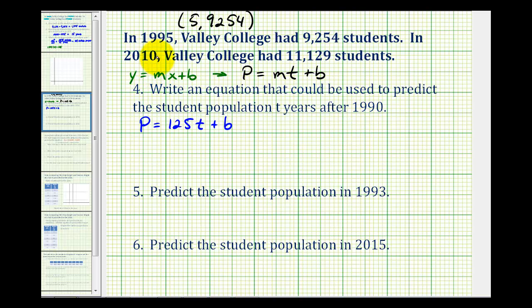And then for 2010, the coordinates of the point would be 15 comma 11,129. So we do have to make this adjustment in order to comply with the directions.